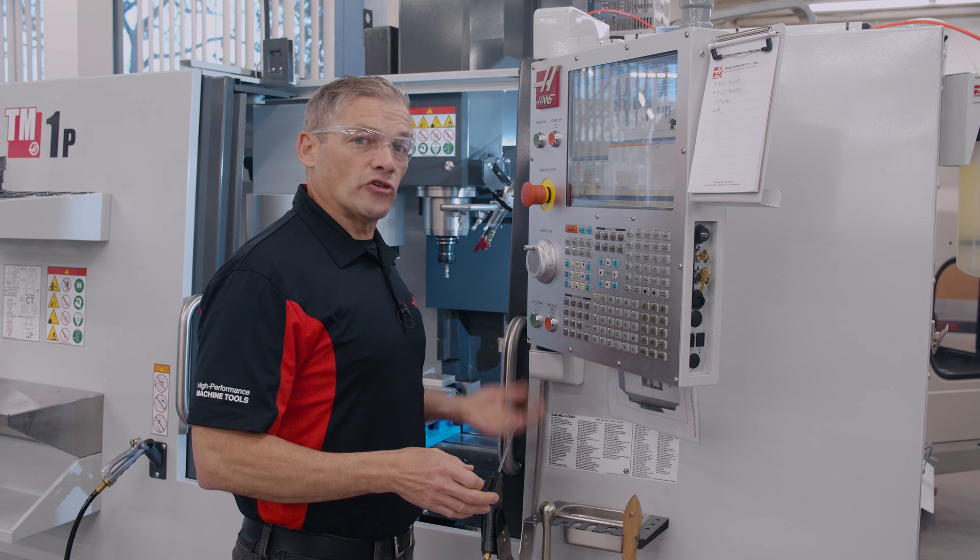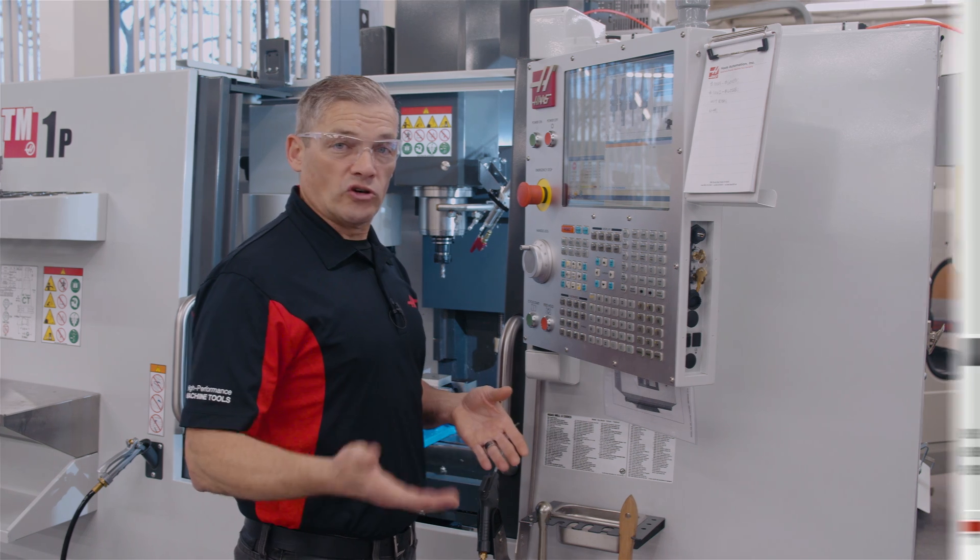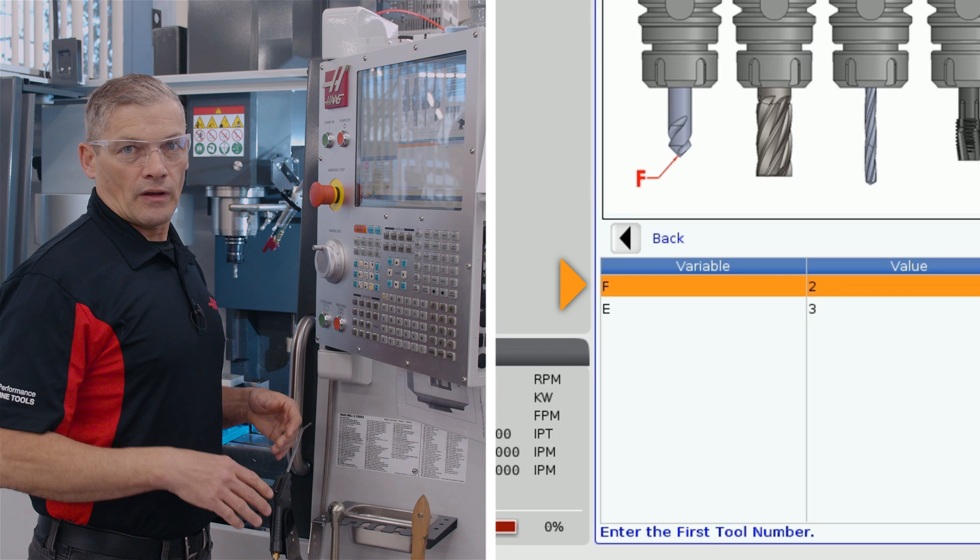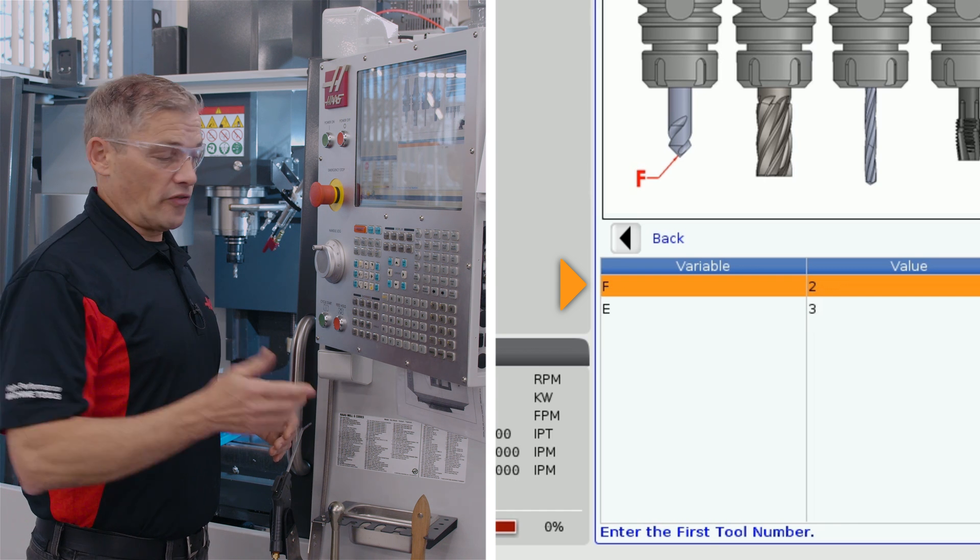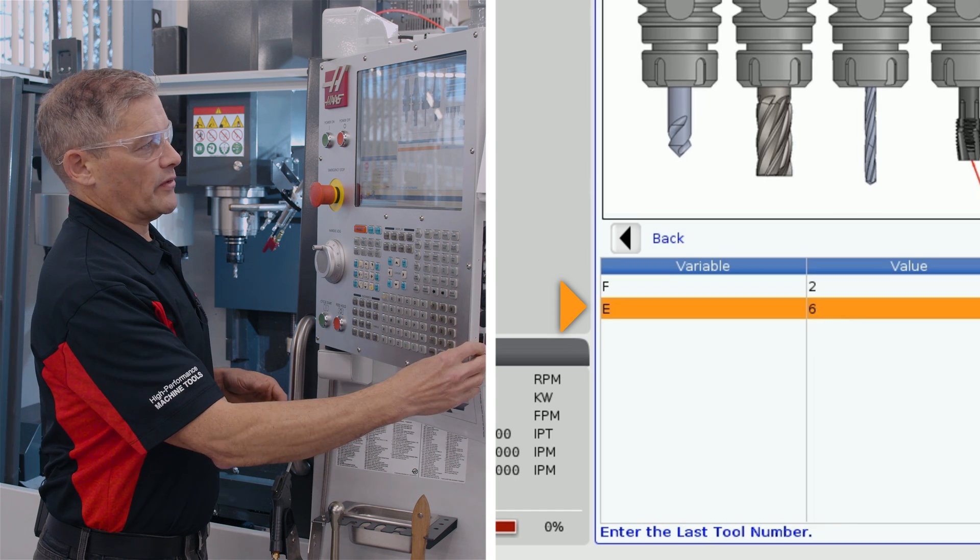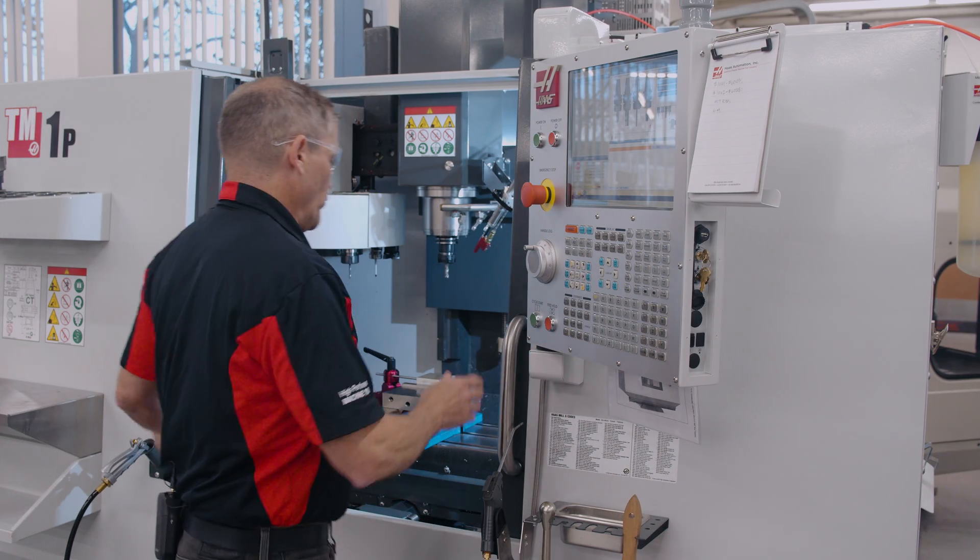Now all I do is enter the tool number I want to start with, which is tool two. And the tool number I want to end with, tool six. Then I hit cycle start.